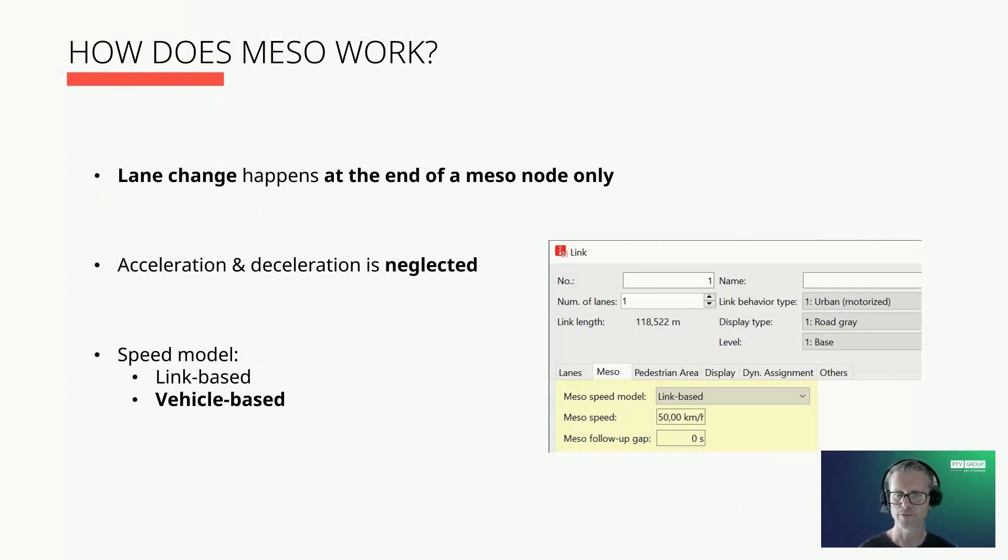You as a modeler have the choice of two speed models: either link-based where all vehicles become the same desired speed on a particular link, or vehicle-based where each vehicle becomes an individual desired speed. The real driving speed is then a result of all interactions.